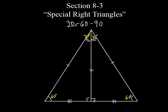Now look what I have: 30, 60, and 90 — I have a 30-60-90 triangle. There's my 30, there's my 60, and there's my 90. What I want to do is see some type of relationships between these sides, so let's go a different color.